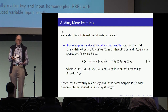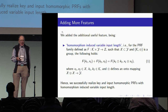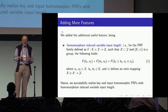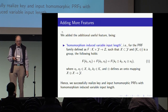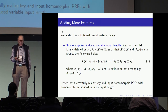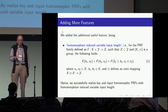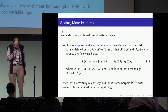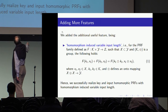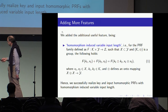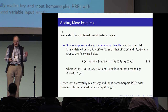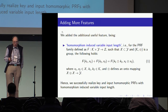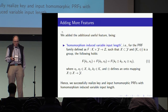We were also able to add more features — what you could call double homomorphisms — in the sense that we have homomorphisms both on the key and the input x, which we express in the formula shown here. This formula expresses the homomorphism where it defines an onto-mapping. We successfully realized key and input homomorphic PRFs with homomorphism-induced variable input length.